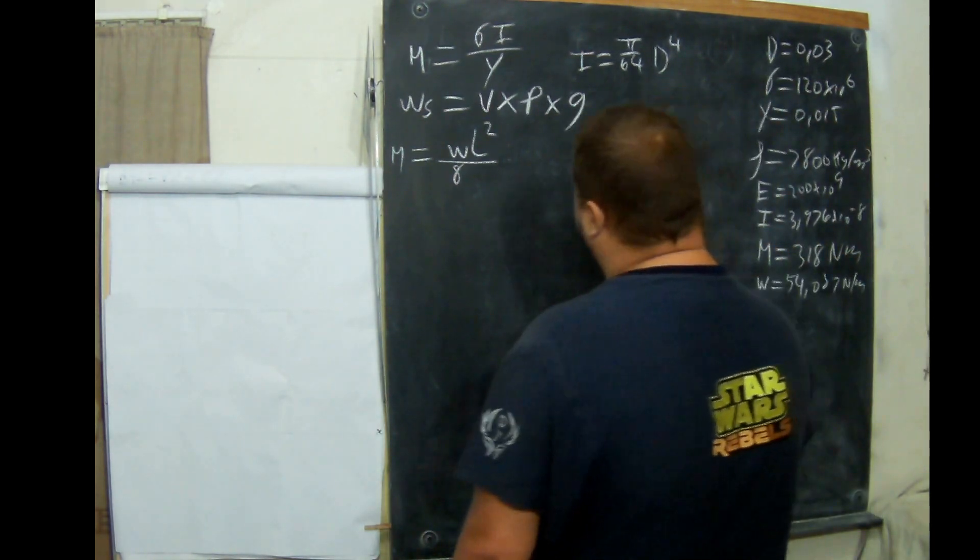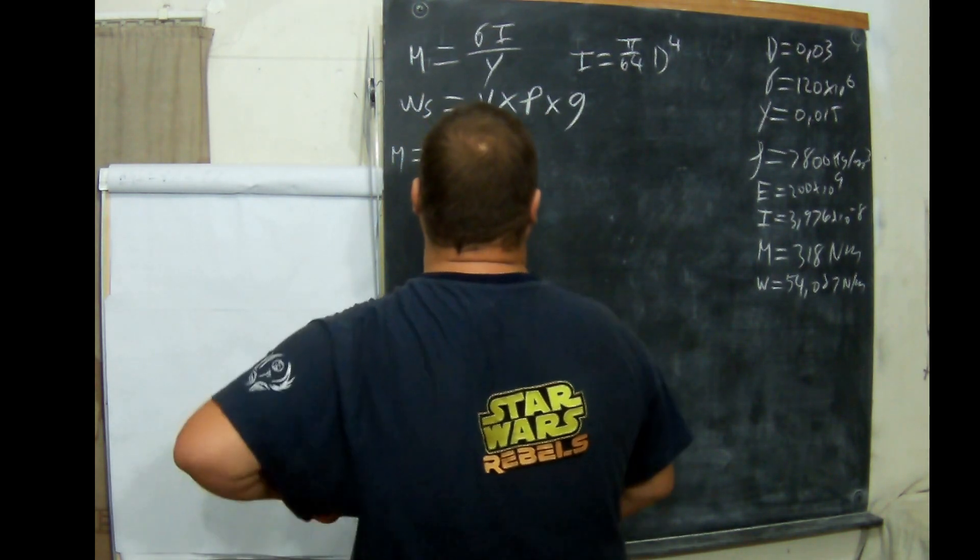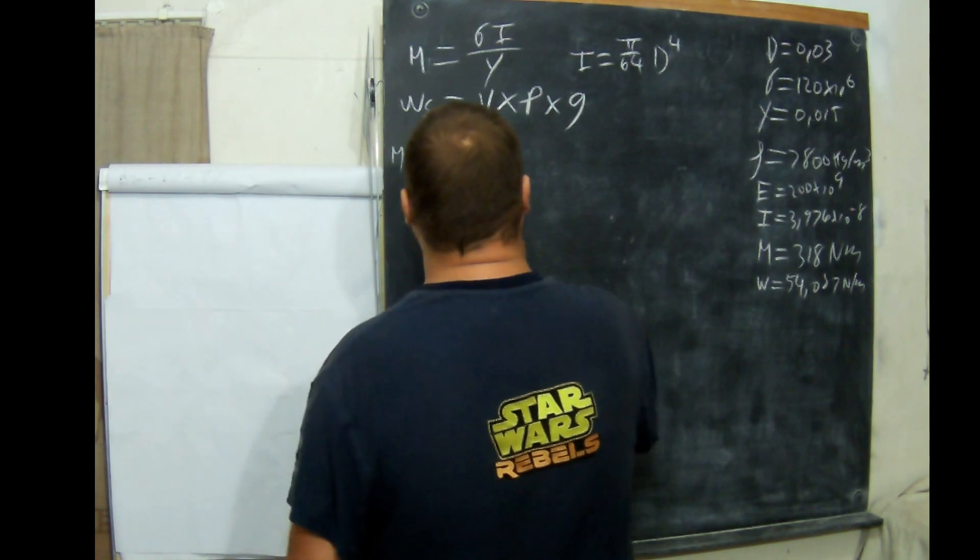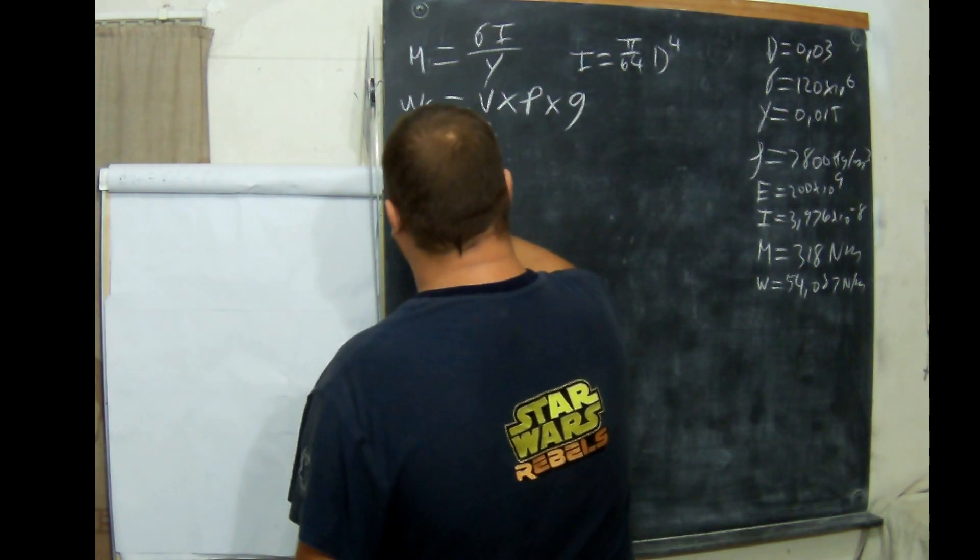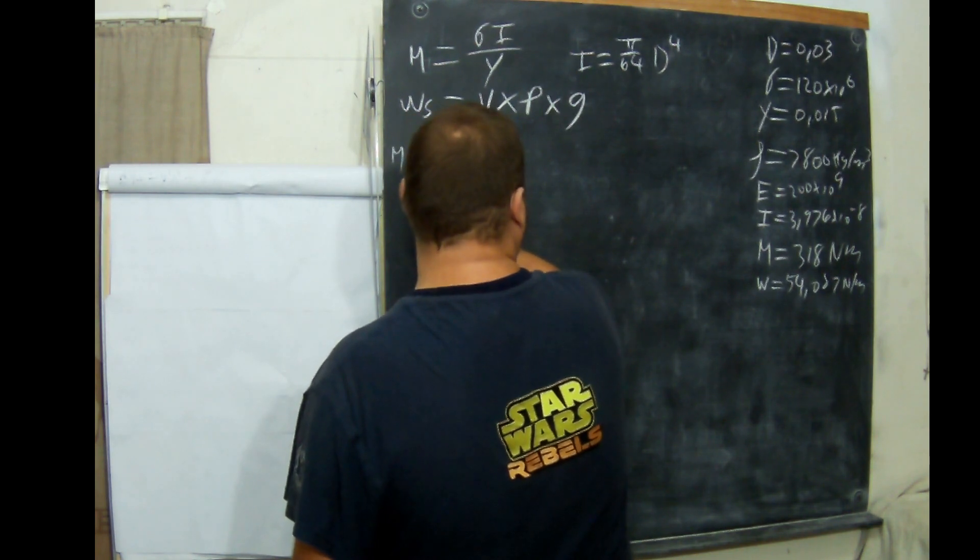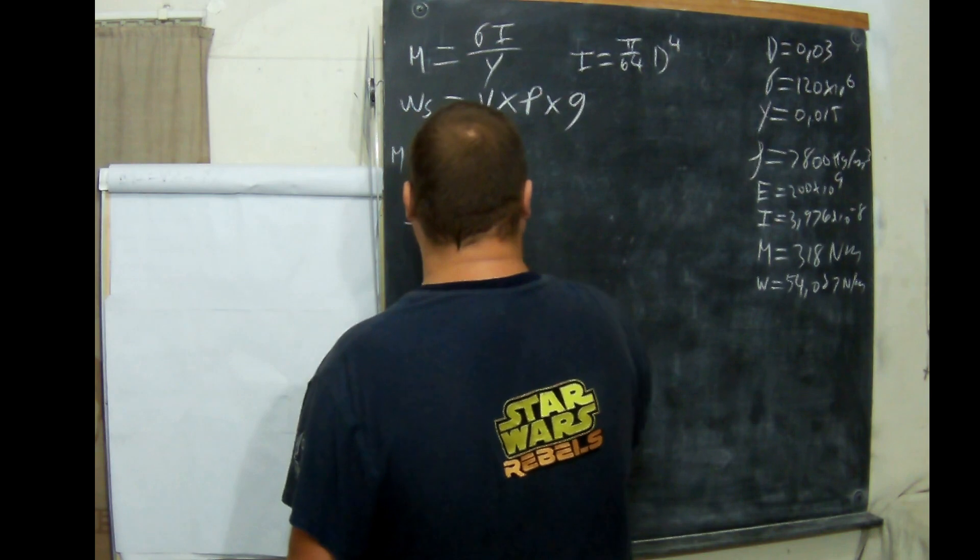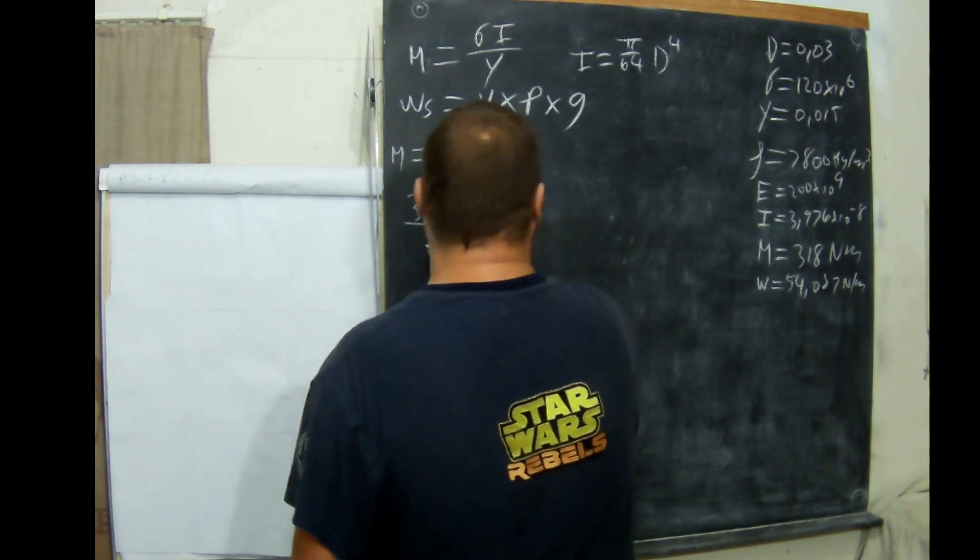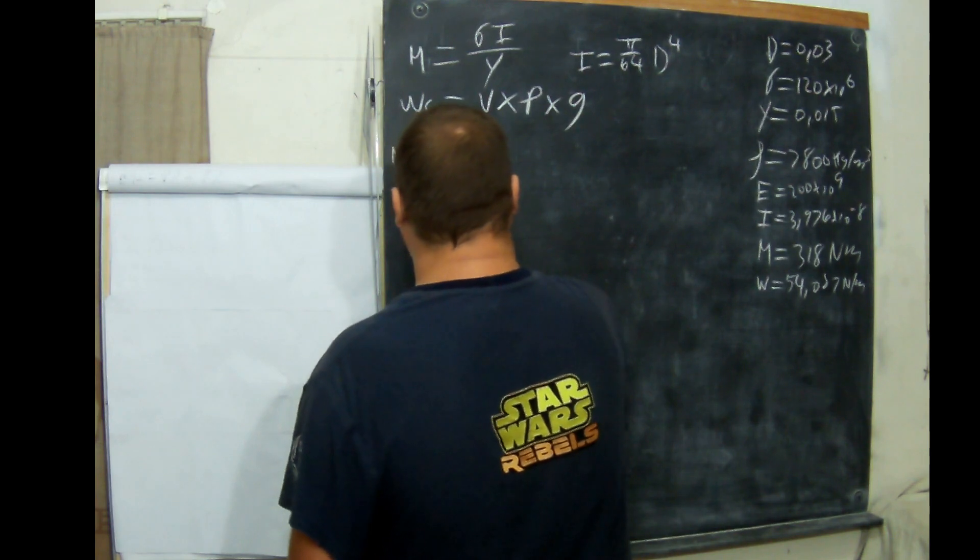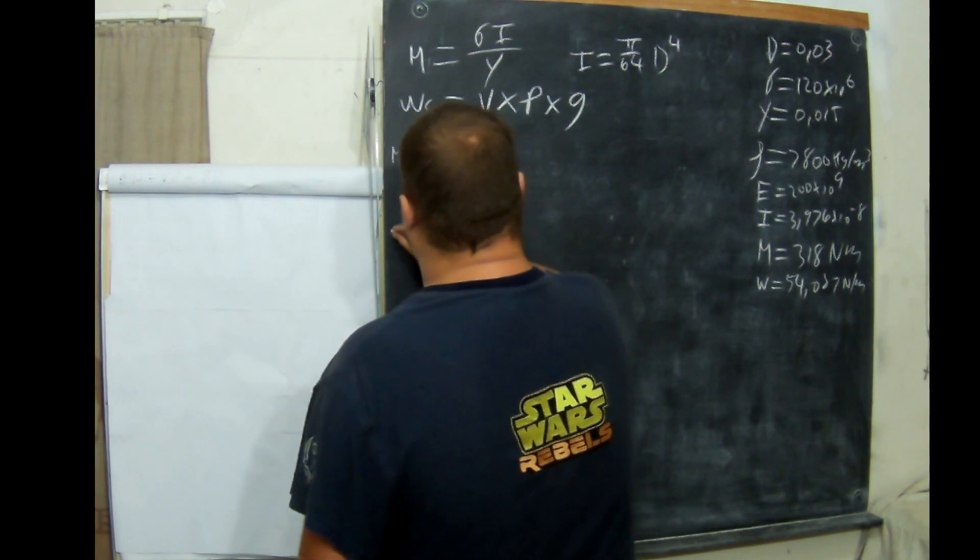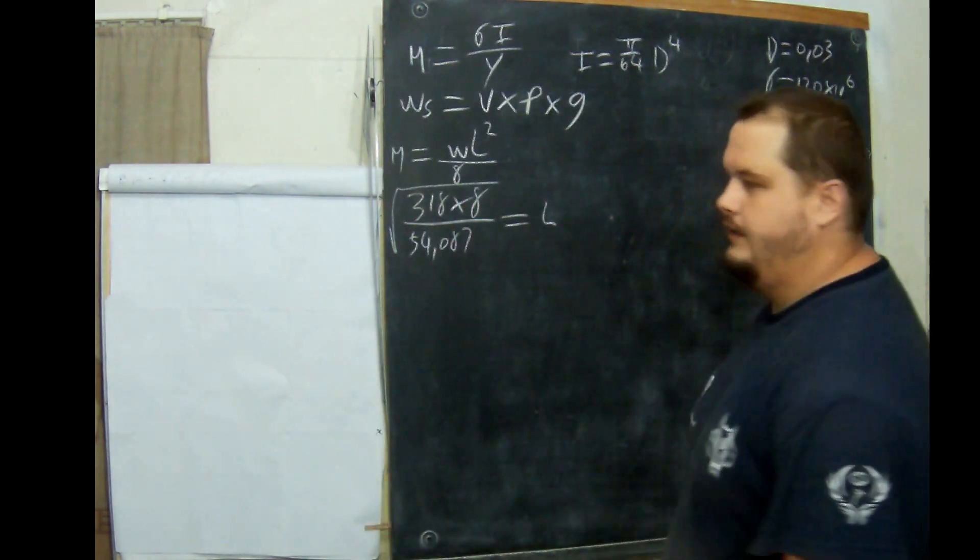Now we've got M and we just need L. So what we do is say M, which is 318 times 8 divided by the weight, which is 54.087, the root thereof equals L.